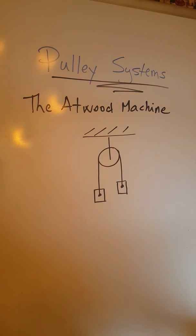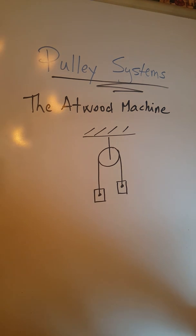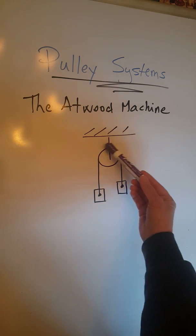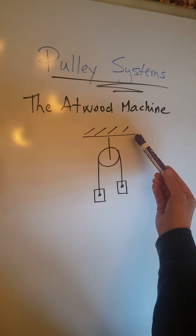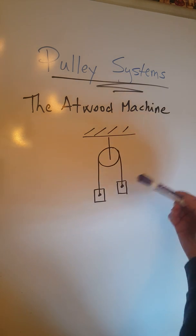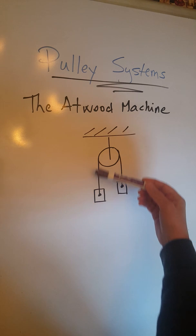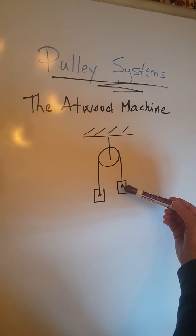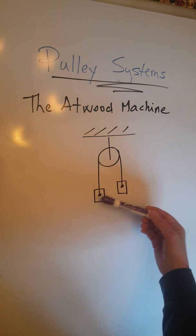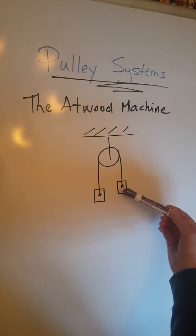Today we are going to look at pulley systems, starting with the simplest possible Atwood machine. It is composed of a fixed pulley attached to a fixed surface like the ceiling, and one piece of string or chain going through that pulley with two objects hanging at the two ends of that string.